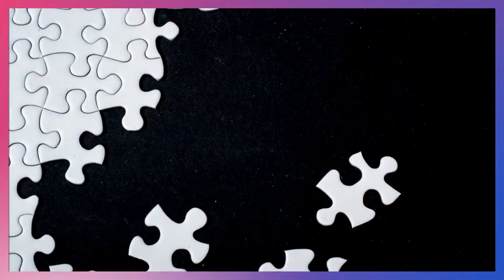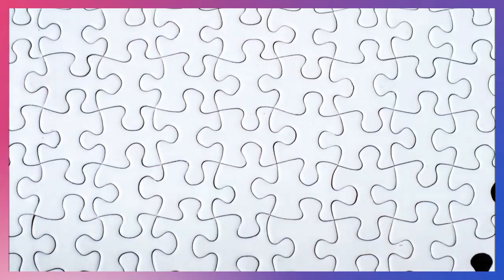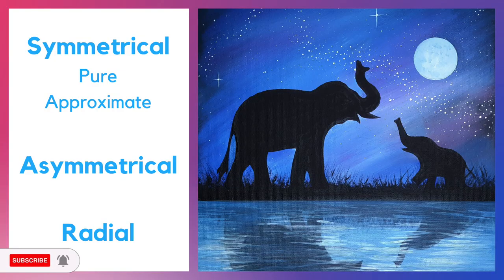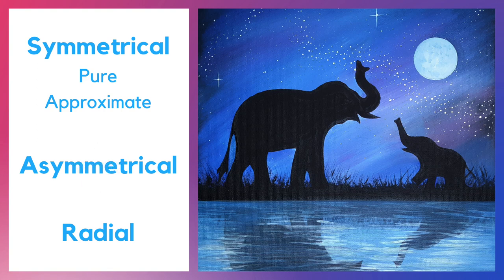Now let's take a closer look at some artworks. Can you tell what type of balance is used here? Yes — asymmetrical balance. This painting is asymmetrical because both halves are not identical. Although both animals are the same, they are not the same size. On the left side we have a much bigger elephant compared to the right side, where we have a smaller elephant.